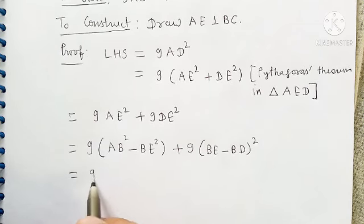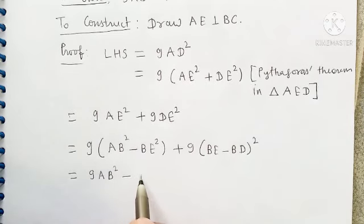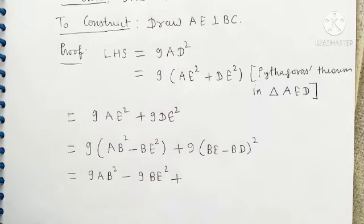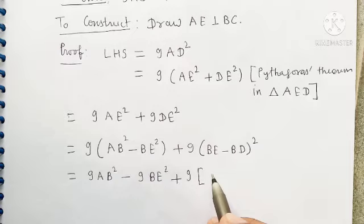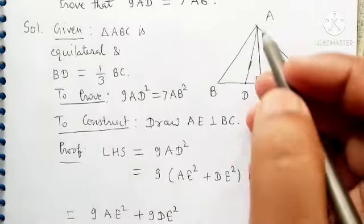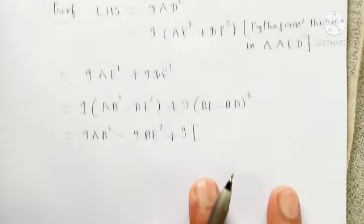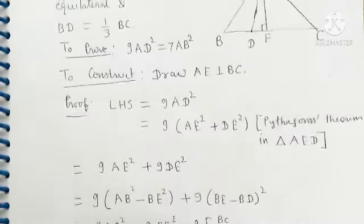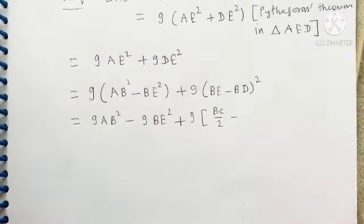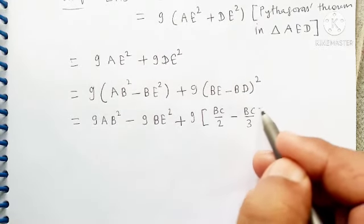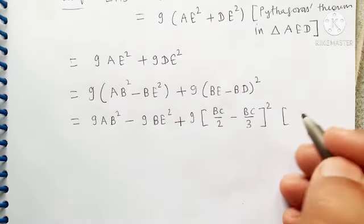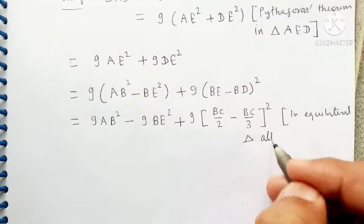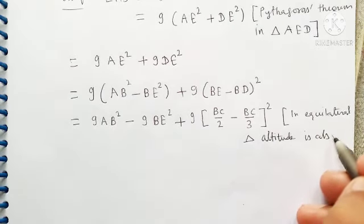9AB square minus 9BE. BE can be written as, in equilateral triangle altitude is also the median of the triangle. So BE can be written as BC by 2, and it is given that BC is equal to BC by 3, so here we write BC by 3. We can write here in equilateral triangle altitude is also the median.